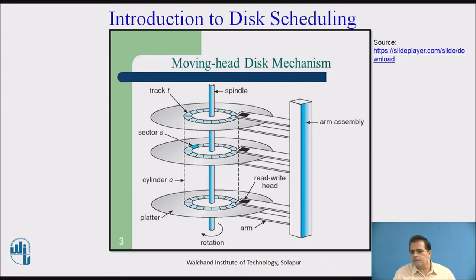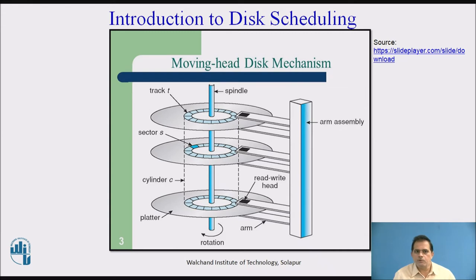There is a read/write head on every platter, shown in the diagram. The actuator arm moves the read/write head in a back-and-forth direction. When you reach the desired track, you get the data. Suppose the read/write head is on track number 1 but the data is on track number 20, 30, or 50. To move the read/write head from track 1 to the desired track is done by the operating system, and the time taken during this movement is called the seek time.